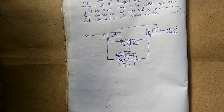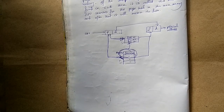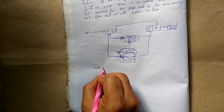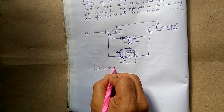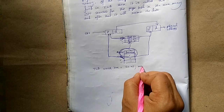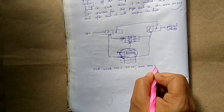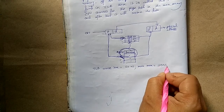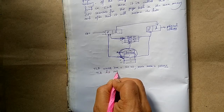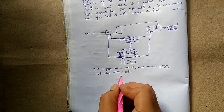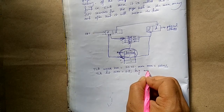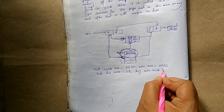Now we will see a numerical example on TLB. In the given problem: TLB access time = 20 nanoseconds, main memory access time = 100 nanoseconds, and TLB hit ratio = 0.8. We have to determine the average memory access time.